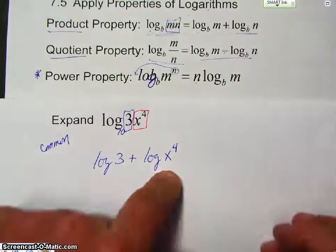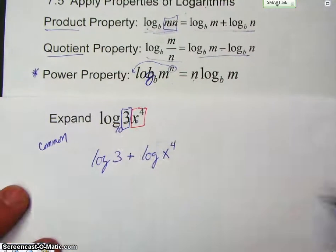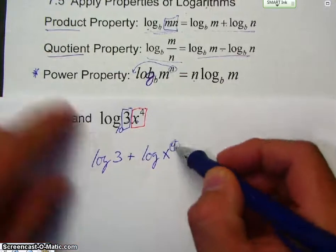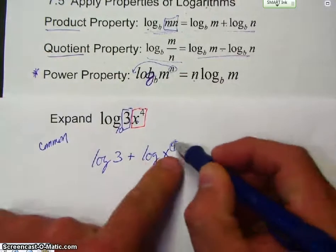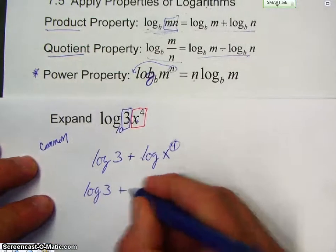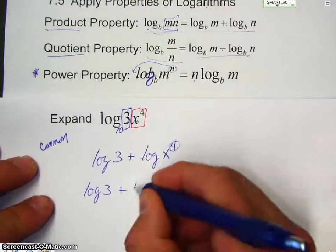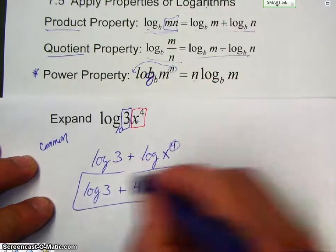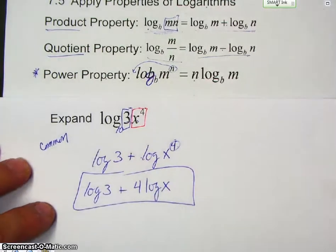So, we expanded it. Now, we want to clean it up. If you notice here, this one has an exponent. So, that means by the power property, I can bring this exponent down. So, the first log stays the same. This 4 now becomes the coefficient, and there you go. I just expanded a logarithm.